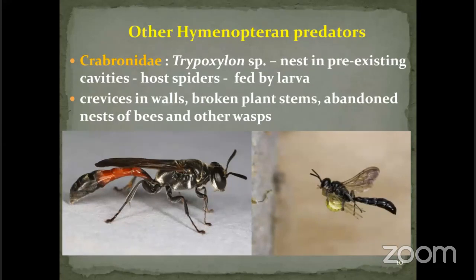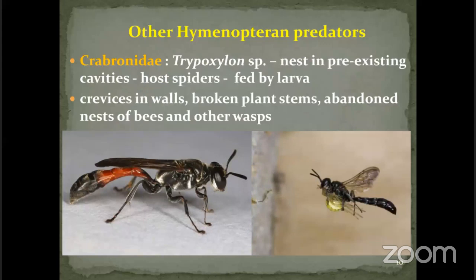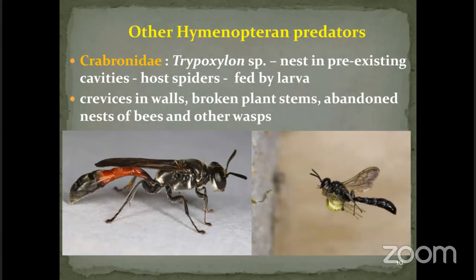In case of other hymenopteran predators, Crabronidae do not construct their own nests — they occupy nests of other hymenopterans that have been abandoned. Crevices, walls, broken plant stems, and abandoned nests of bees and other wasps are utilized for storing the collected spiders. The adult wasp lays its eggs on the spiders, and the larvae start developing on the spiders.